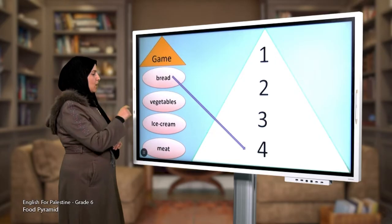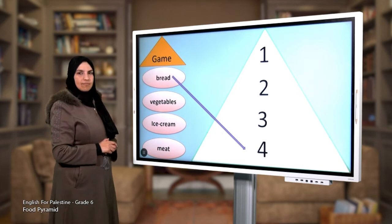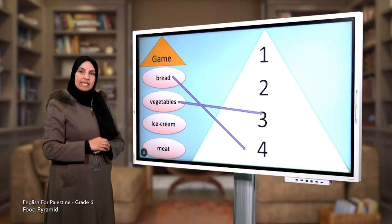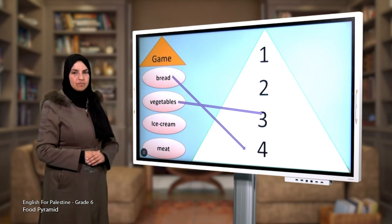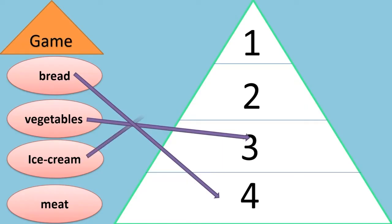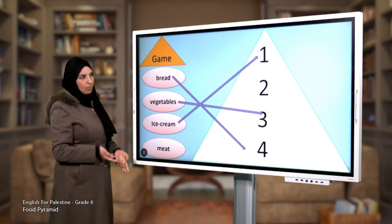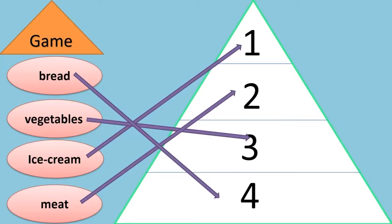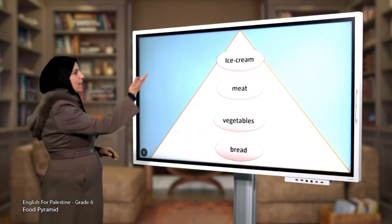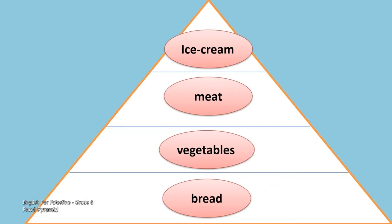Now what about vegetables? In number three — great! Now think of ice cream. Is it healthy? Can we put it in the bottom of the pyramid? No, exactly we can't — we put it in number one. And the correct place of meat will be number two. So we have: ice cream in number one, meat in number two, vegetables in number three, and bread in number four.